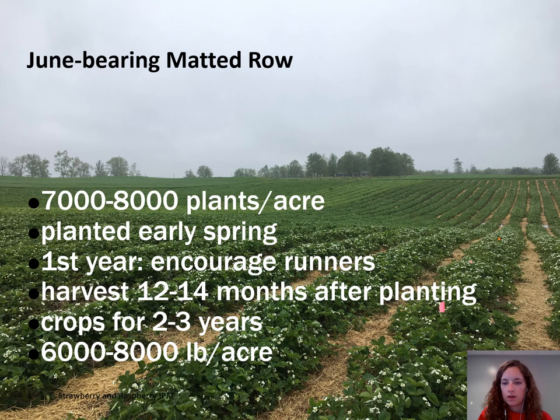Today I'm going to speak about two different production systems in Ontario: the June-bearing matted row system and a day neutral plasticulture system. The June-bearing matted row is the traditional strawberry production system in Ontario and it's a perennial system where planting begins in the spring and then harvest occurs the next June and July. Runnering is encouraged in that first year because the runners lead to daughter plants which fill in the field. Runners are produced during long days and warm temperatures, and because in June-bearing production growers rely on these daughter plants to fill in the row, they are planted at a lower density than day neutral strawberries.